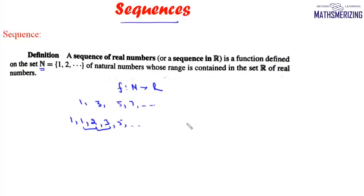There could be some sequences which do not have any mathematical formulation. For example, the sequence of prime numbers — for that, we do not have any formula as yet.